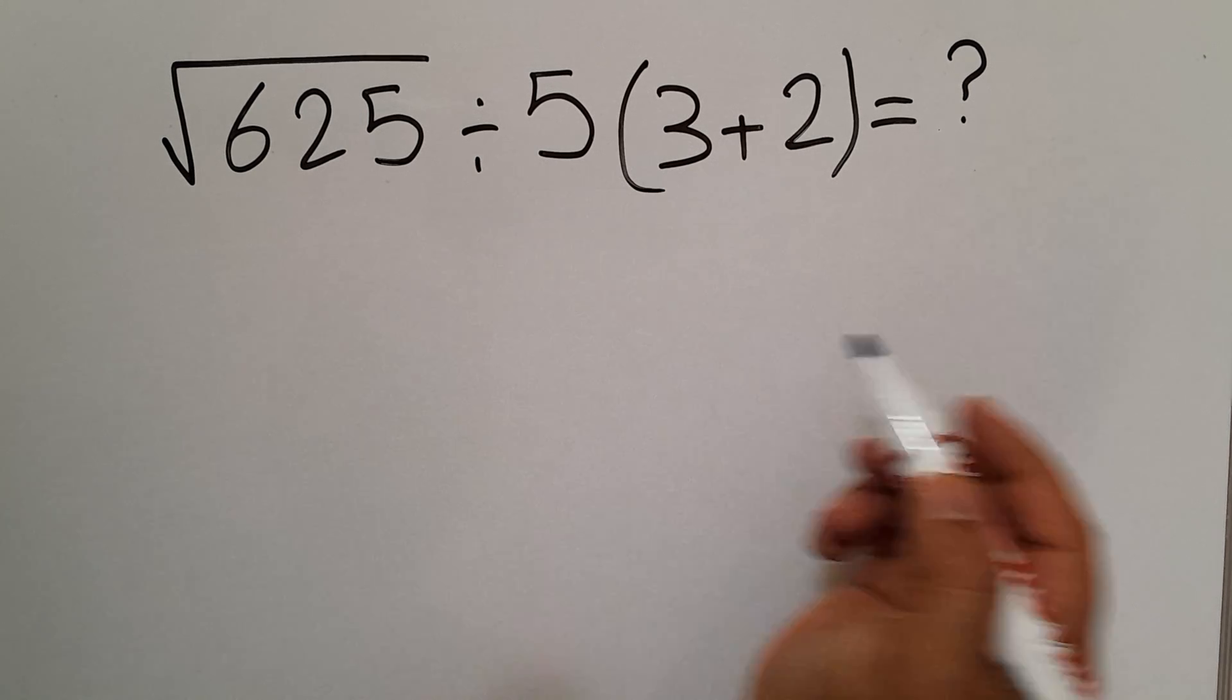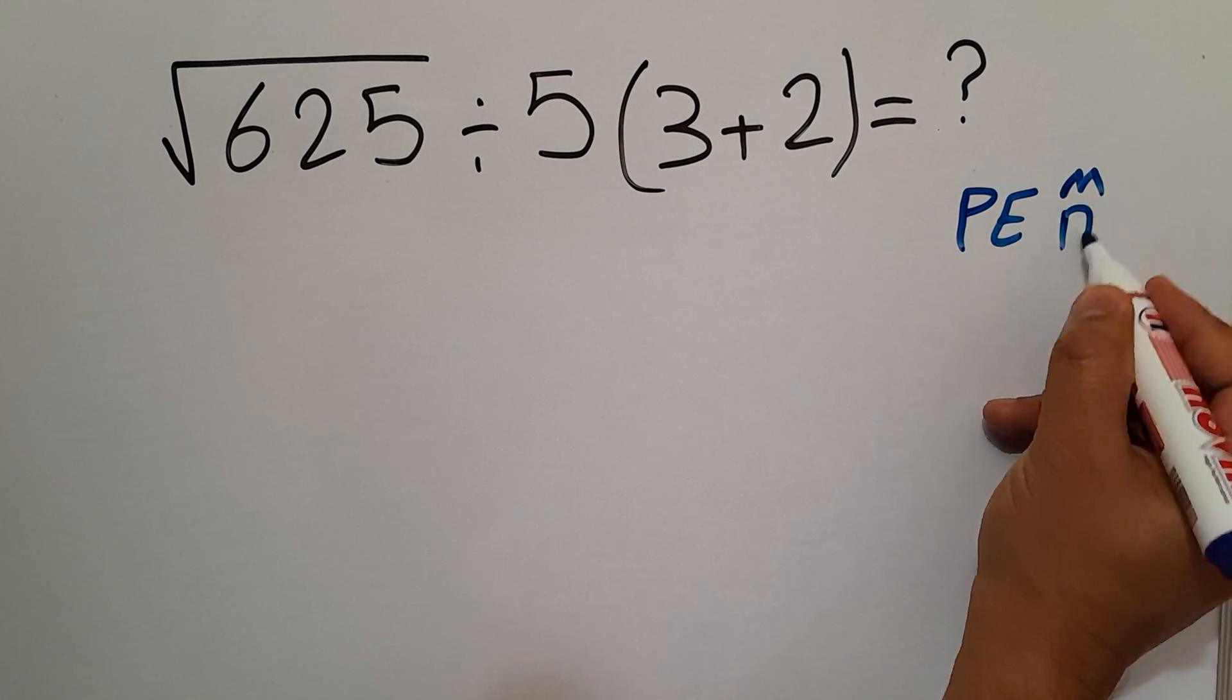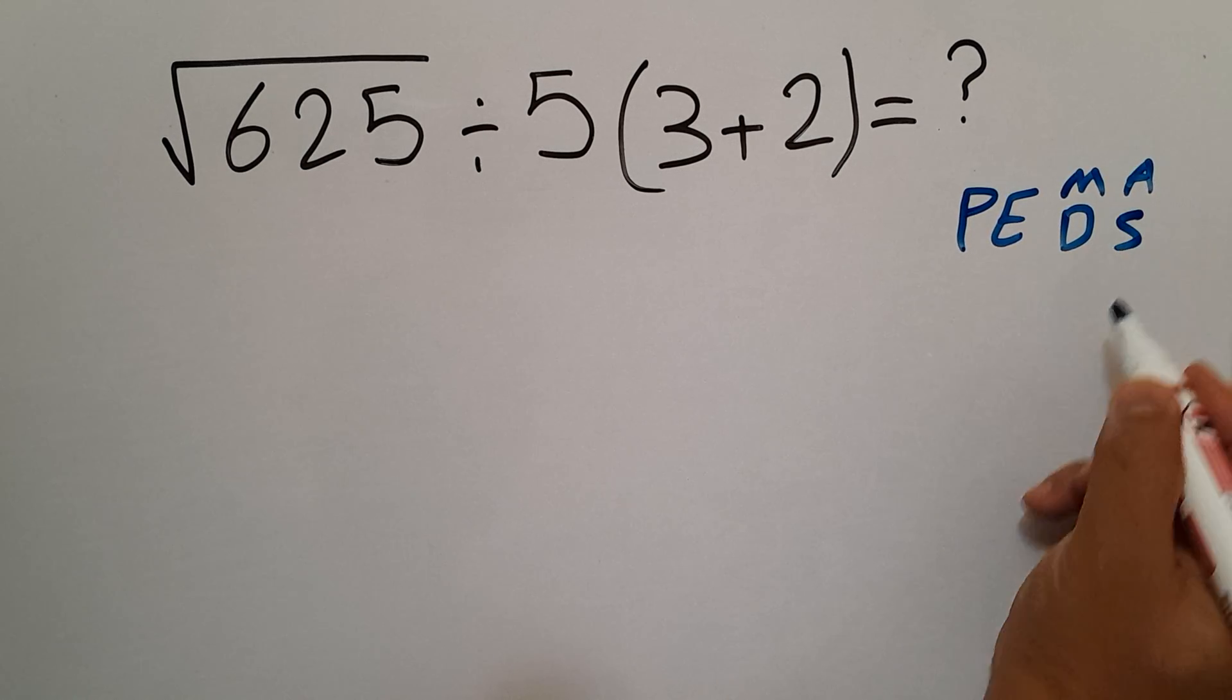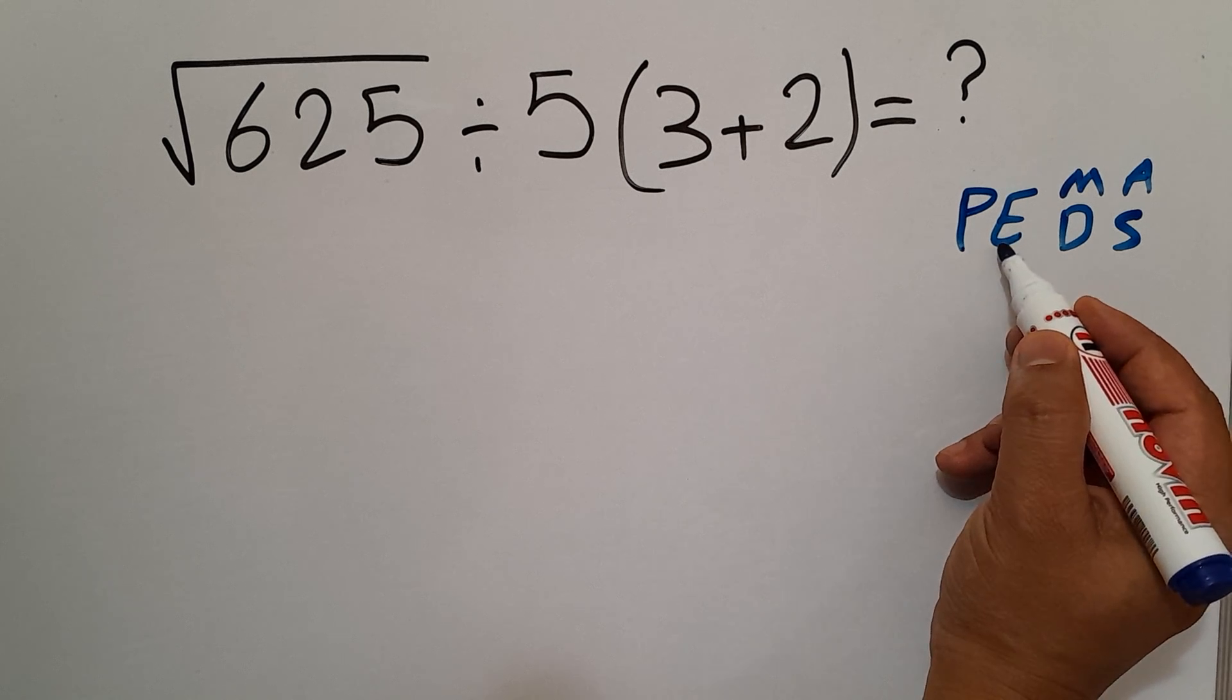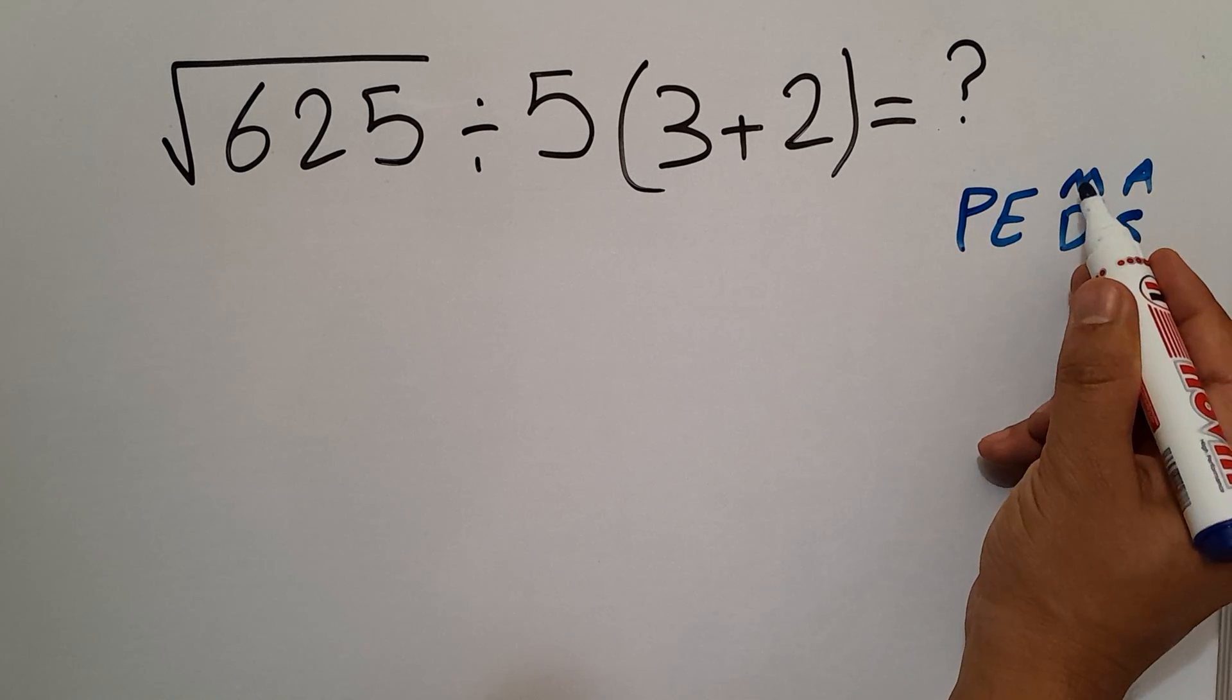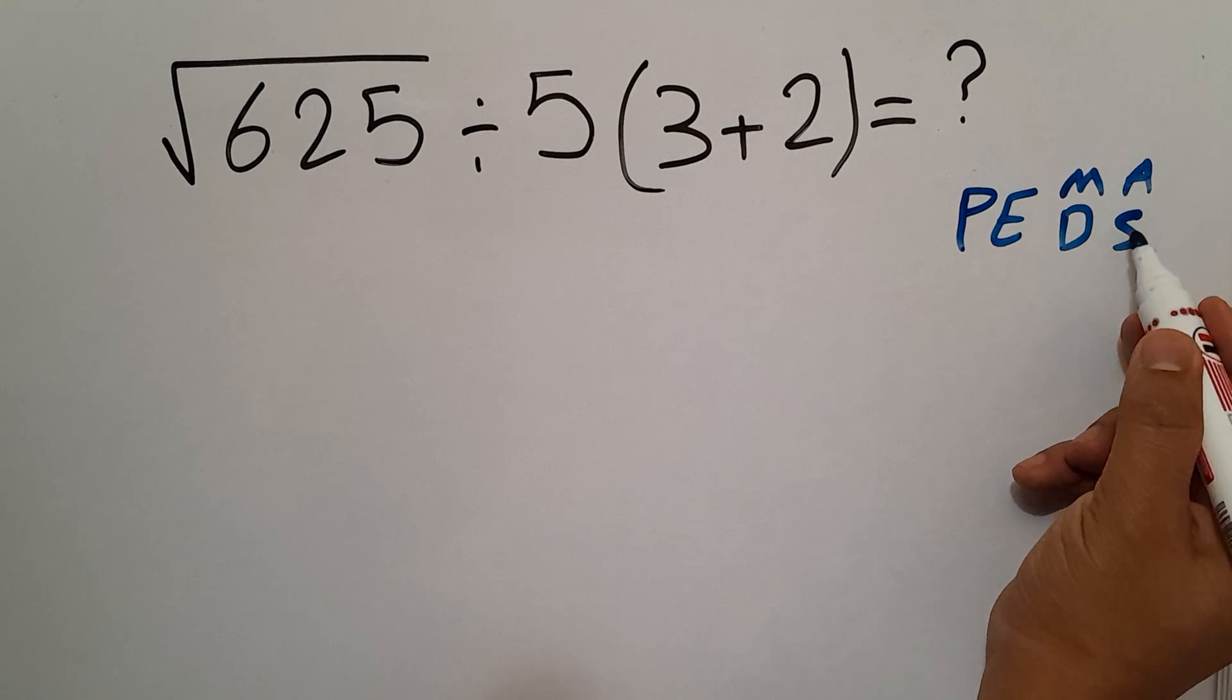According to the order of operations, which is PEMDAS, P stands for parentheses, E stands for exponents, M and D stands for multiplication and division, and A and S stands for addition and subtraction.